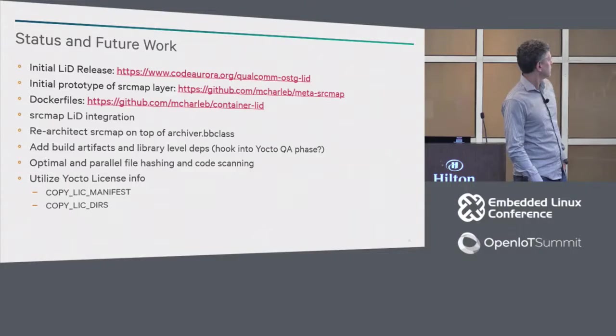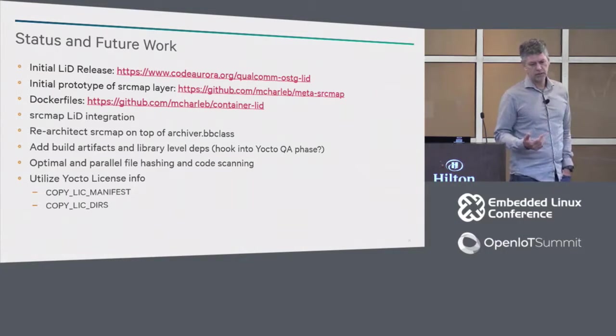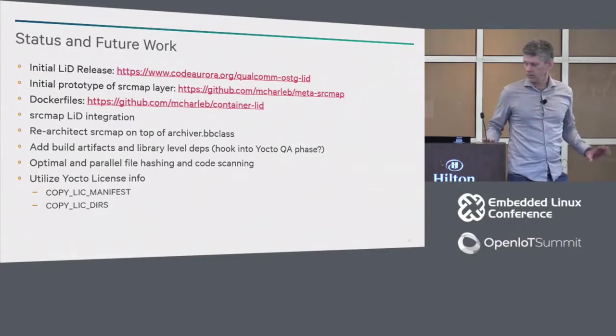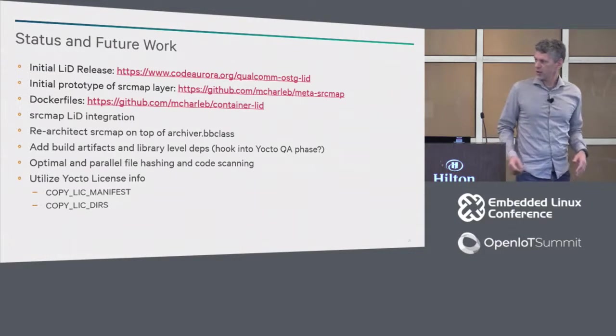Build artifacts need to be added — I'm trying to figure out how to hook that into the QA phase of the packaging QA. Then creating an optimal scanning setup, being able to parallelize as much of this as possible. LID does parallelization but not distributed computing — it will do it on a machine, using the Python framework to create parallel analysis. When you give it a directory or a set of files, it will use parallel threads.